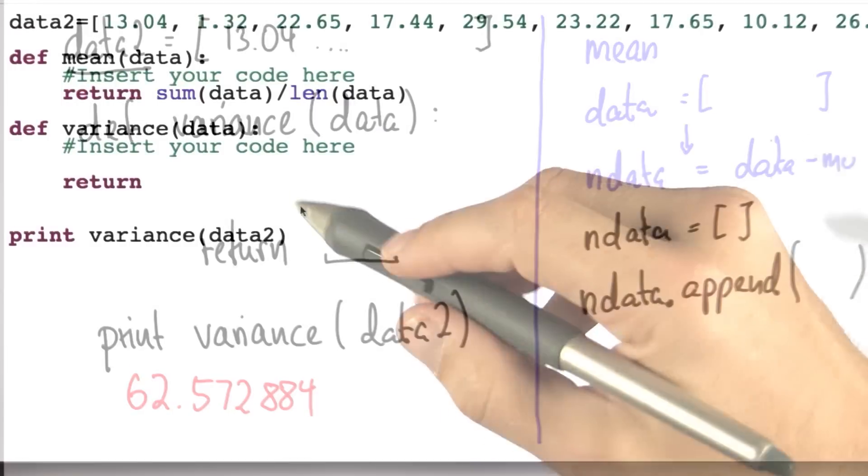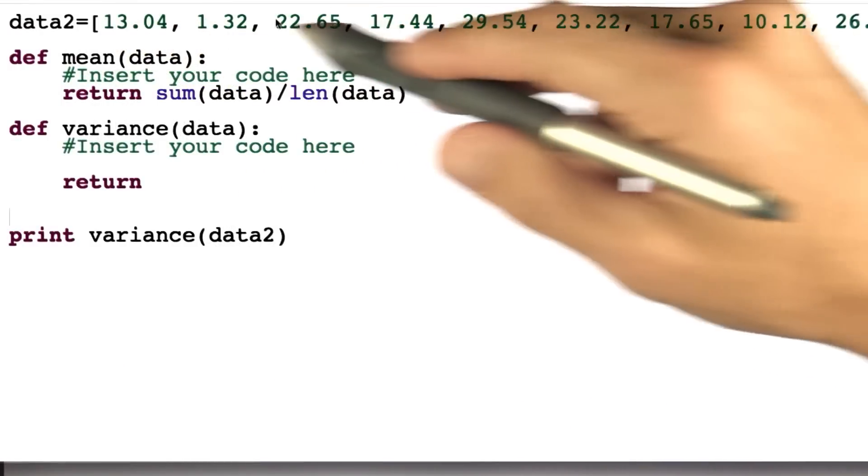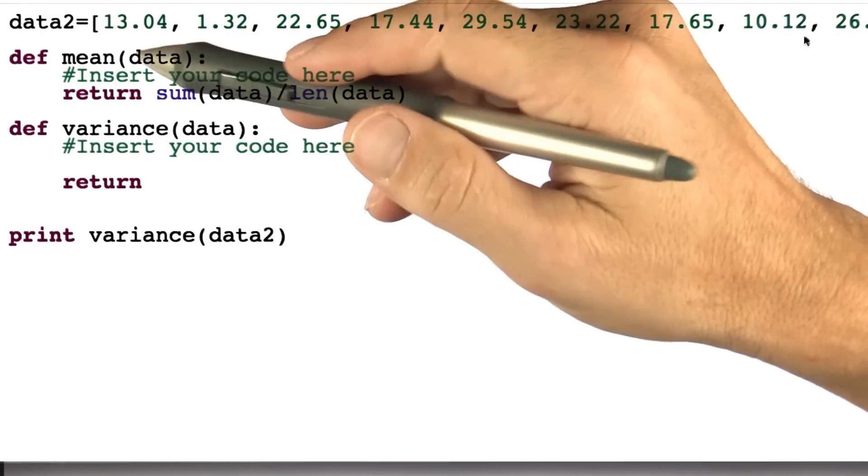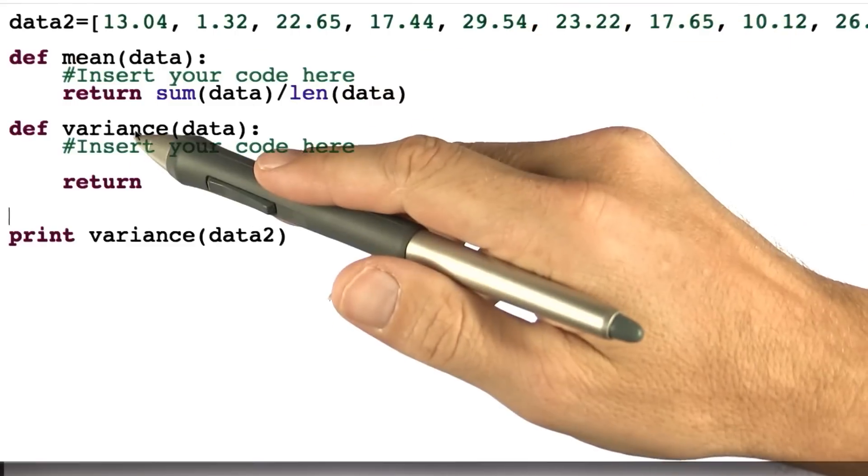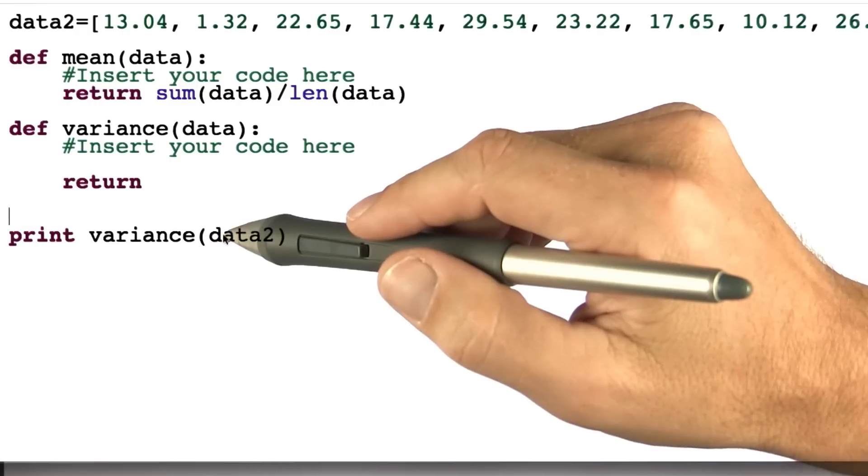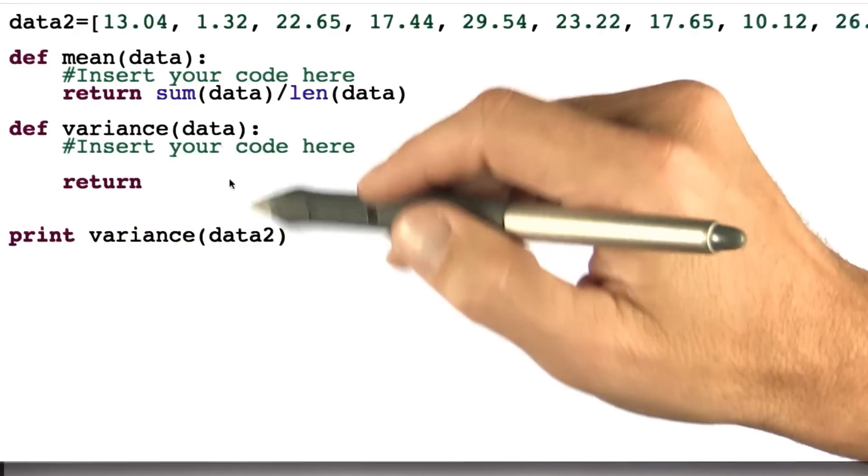If not, listen to the video again. So here's the coding environment, a data set, I've given you the function mean that we've programmed before, and now you are to program the function variance. So that when you print variance of the data set, you get the desired 62.572884.